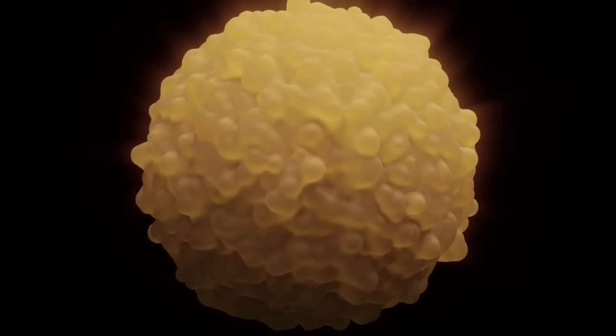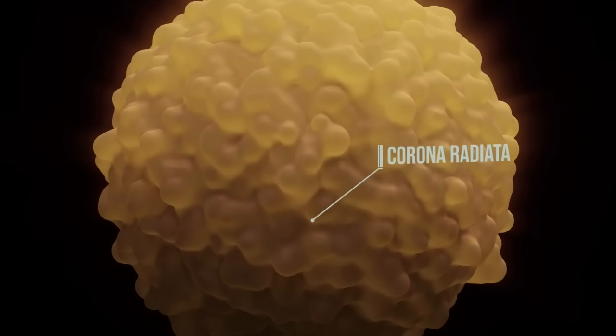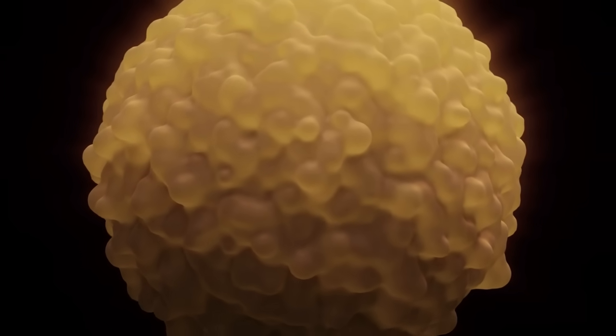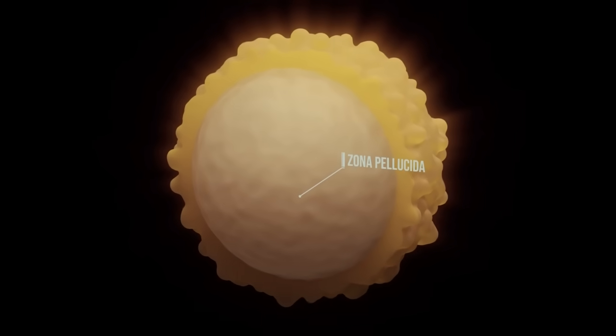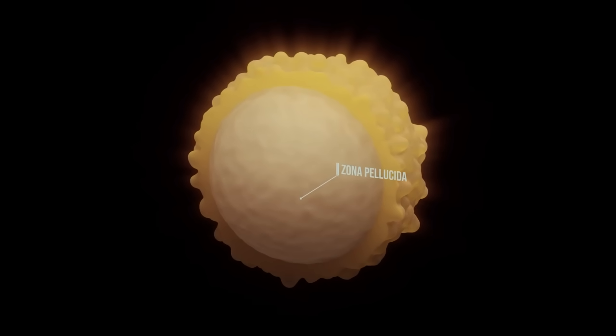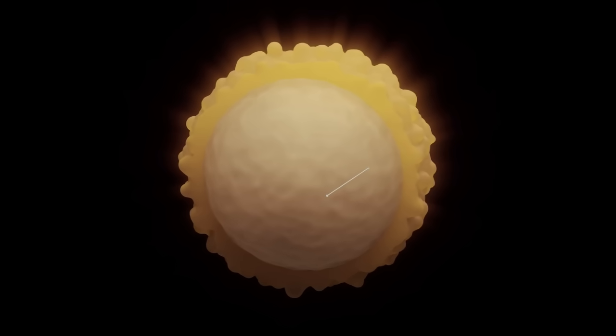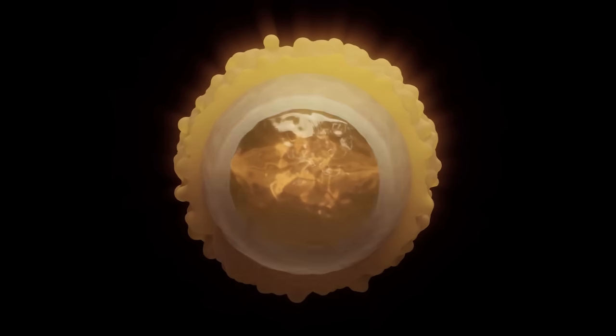The egg consists of an outer layer called the corona radiata. Underneath is another protective layer, the zona pellucida. Both layers must be penetrated by the sperm cell in order to reach the cell nucleus that contains 23 different chromosomes.